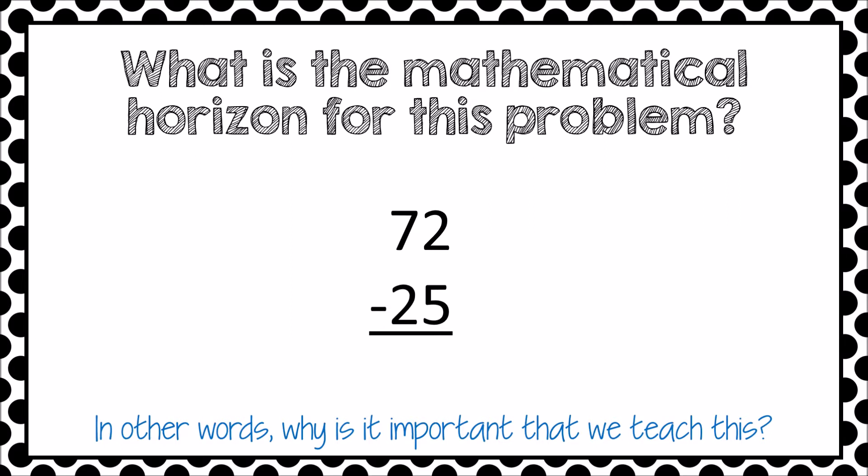With this problem, the mathematical horizon is that we can regroup to subtract any two numbers, no matter how many digits they have. In second grade, we start with two two-digit numbers using a variety of strategies so that students can learn that numbers can be decomposed to make subtraction easier. By the end of fourth grade, we learn that the standard algorithm can be used to decompose and subtract any two numbers regardless of their length.